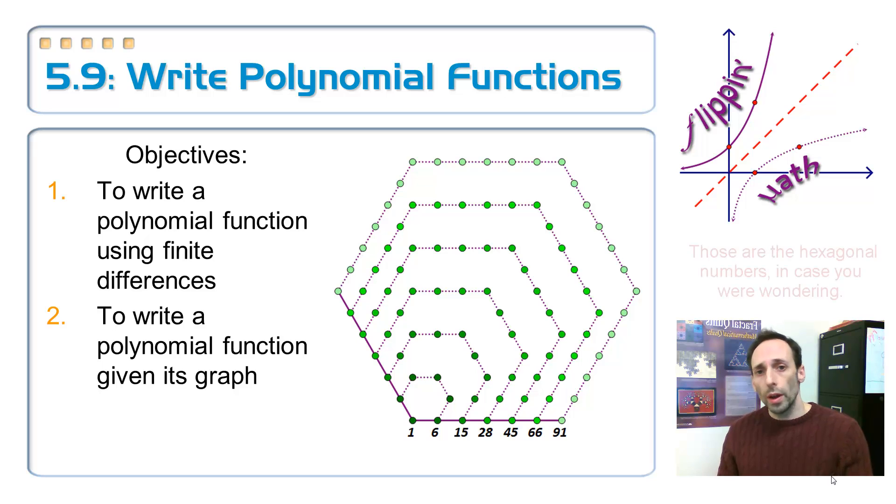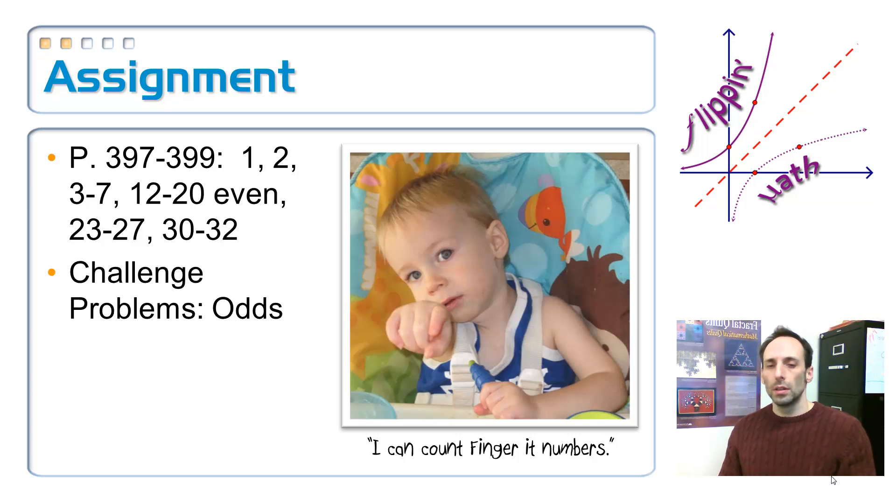That wraps up the last lesson here on writing polynomial functions. We were able to look at a sequence of numbers with equally spaced x values - first, second, third, fourth - and looked at the y values and saw what they went up by. Whatever they go up by, those are called the finite differences. And if those finite differences are constant at some level, we should be able to find a polynomial function that comes up with them. Third order means it's cubic. Second order means it's quadratic and so on. Then we also were able to have a collection of points, maybe from a picture of a graph or maybe even from a set of data from the table and come up with a cubic equation that fits that model, that fits that graph. So here's your assignment. And we're pretty much all done here. I can count it on my fingers. Finger it numbers. Ha ha, finger it numbers. Rowan, that's pretty clever. Bye.